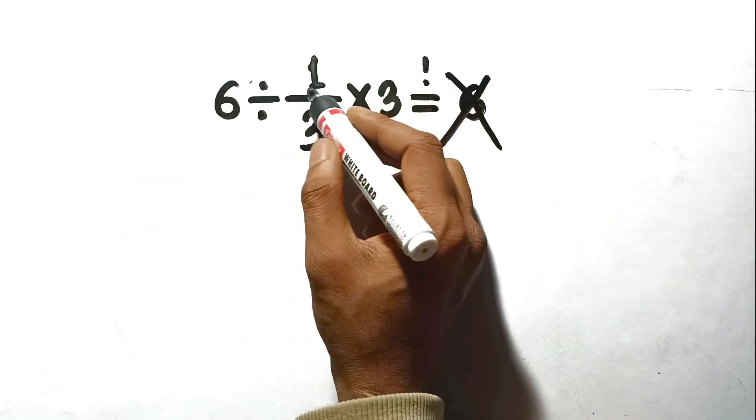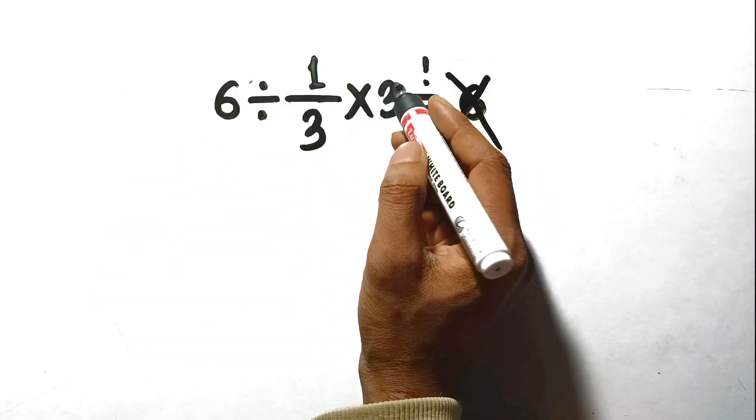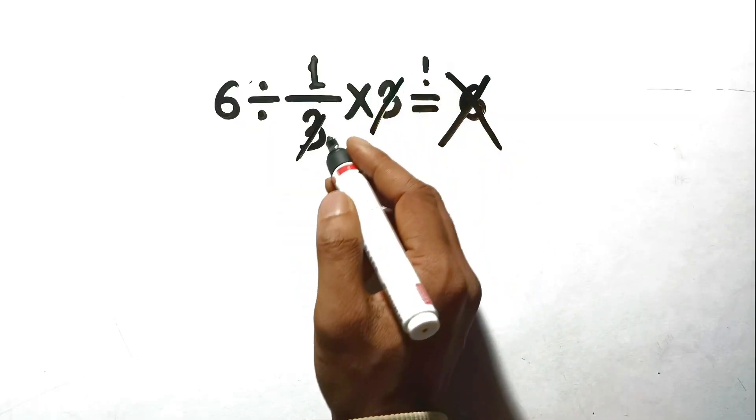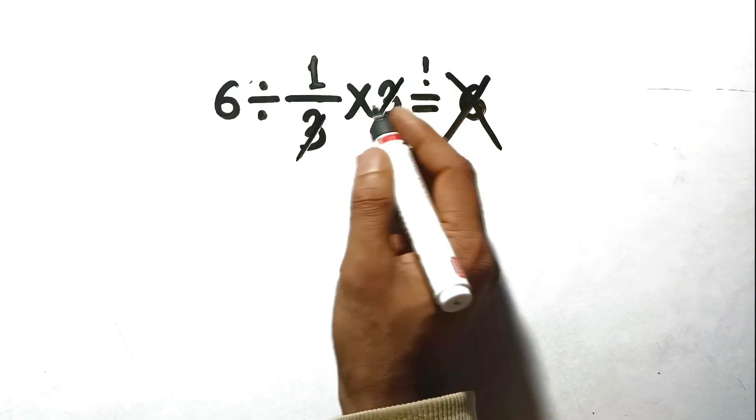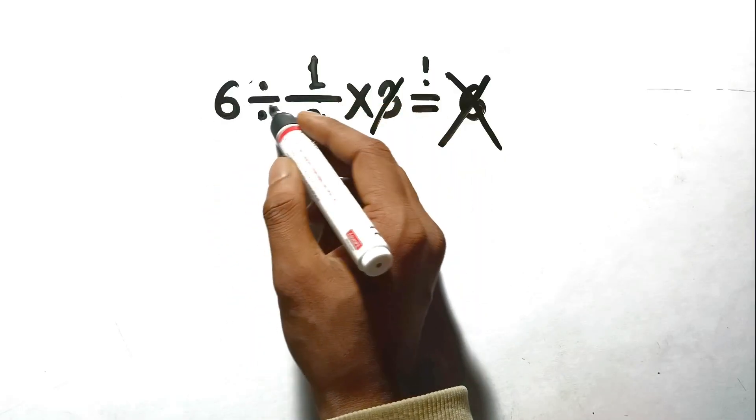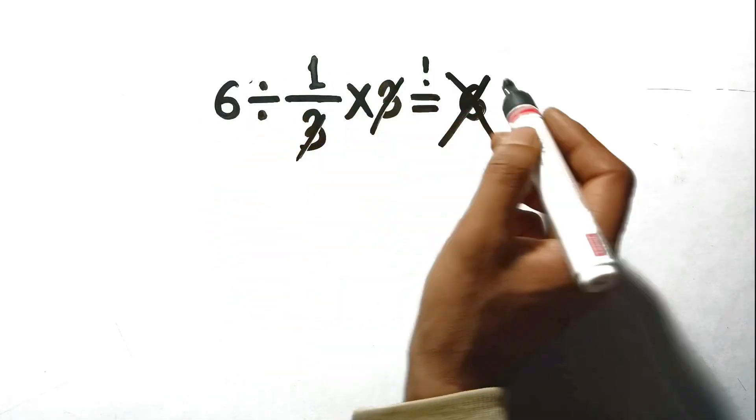You look at that fraction one-third and the number 3 sitting right next to it, and your brain just screams, cancel them! It is so satisfying to cross out that 3 on the bottom and the 3 on the top, leaving just a 1. So then you have 6 divided by 1, which is obviously 6.